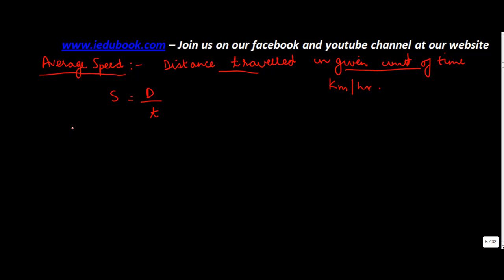Now suppose if an object was moving, let us say in time zone A it travelled at 60 kilometer per hour. In time zone B it travelled at 80 kilometer per hour.